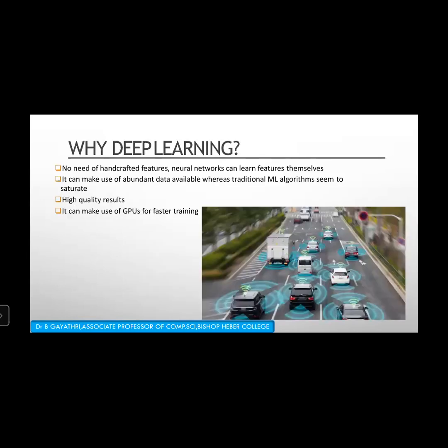Why do we use deep learning for computer vision in self-driving cars? Instead of hand-crafted features, neural networks can learn features themselves. They can make use of the abundant data available, whereas traditional machine learning seems to saturate. Deep learning provides high-quality results and can make use of GPUs for faster training.